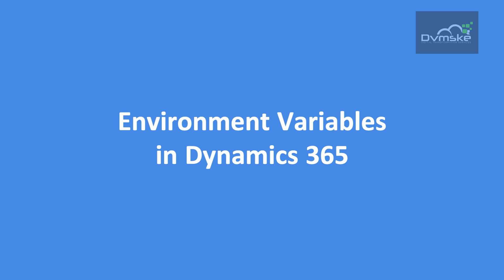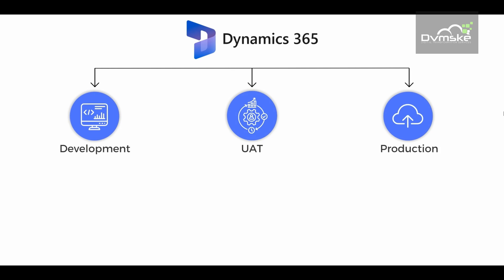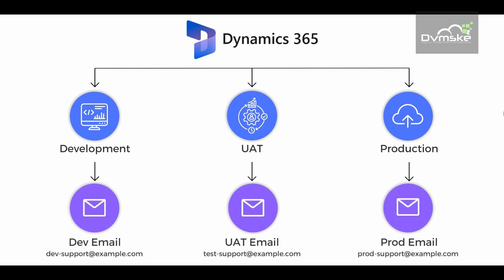Imagine that there is a company that has a customer support system and they use Dynamics 365 CRM. The company needs to ensure that their CRM solution can be seamlessly deployed across their three different environments: development, UAT, and production. Customers can contact the company through multiple ways, and one of the ways is email, so the company has three different email addresses across each environment.